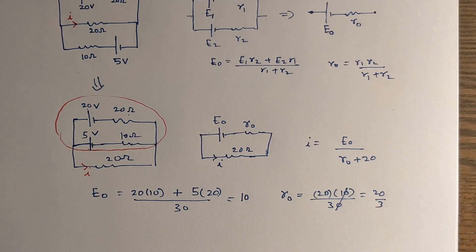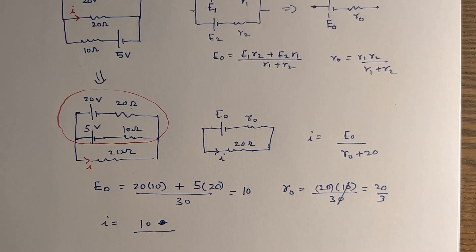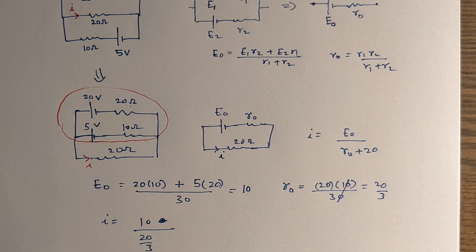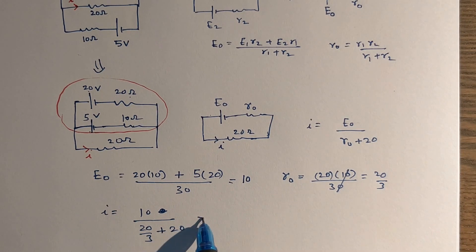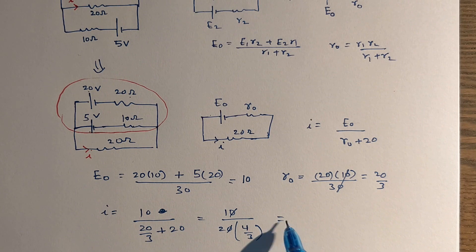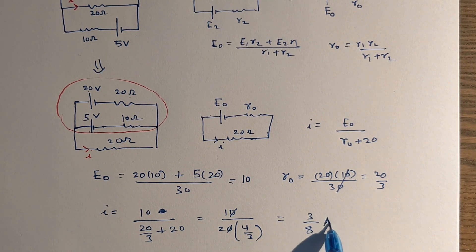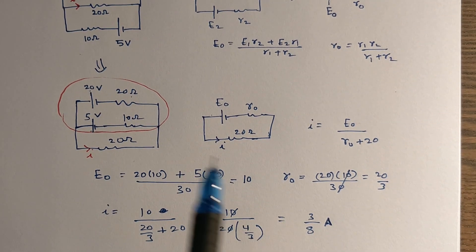Now I can replace E-naught and R-naught: current = 10 / (20/3 + 20). Factoring out 20: denominator = 20 × (1 + 1/3) = 20 × 4/3 = 80/3. So current = 10 × 3/80 = 3/8 amperes — the same answer we got using the other two methods.